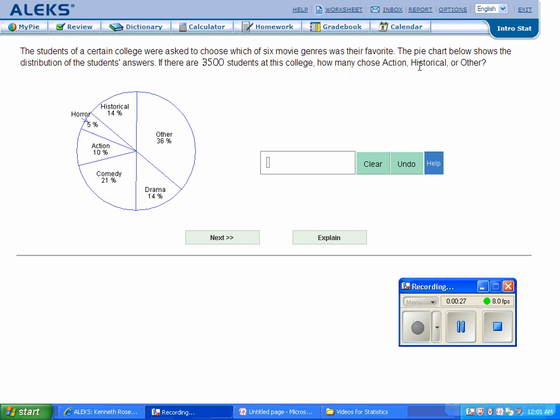We're going to add up action, historical, and other. Action is 10%, historical is 14%, that makes 24%, plus 36% for other gives us 60%. We need 60% of 3,500, so we do 0.6 times 3,500.